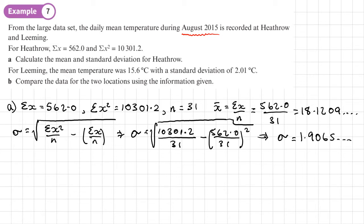So I'm going to give both my answers to three significant figures. So the mean is going to be equal to 18.1. That's three significant figures. And the standard deviation, that's going to be equal to 1.91. Again, that's three significant figures.